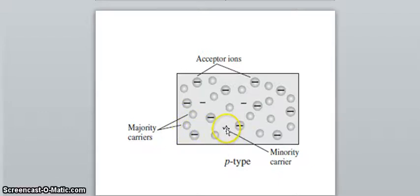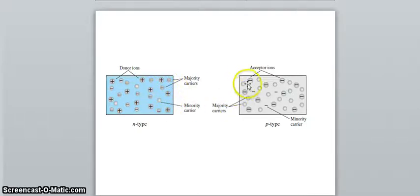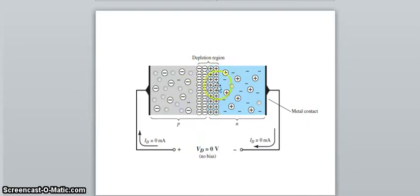There are also a few minority charge carrier electrons available. When we form p-type and n-type semiconductor together, the mobile ions exchange at the junction and recombination between electrons happens while immobile ions remain in place. As more and more electrons move from one side to the other and holes are recombined, they leave immobile ions nearby the junction, forming a region there.